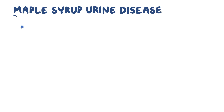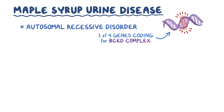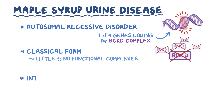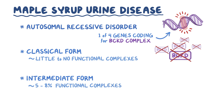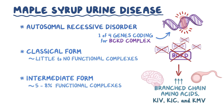Maple syrup urine disease is an autosomal recessive disorder where there's a mutation in at least one of the four genes that codes for the BCKD complex. The more common form is called the classical form, where there's little to no functional complexes. The less severe form is called the intermediate form, where only 5 to 8 percent of the complexes are functional compared to normal. Decreased BCKD complex activity means that all the branched-chain amino acids and their first-step metabolites — such as alpha-ketoisovalerate, alpha-ketoisocaproate, and alpha-keto-beta-methylvalerate — build up in the blood and body tissues like the brain, muscle, and liver.